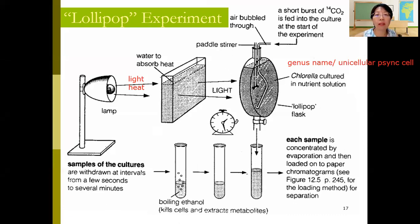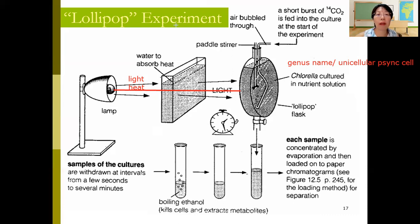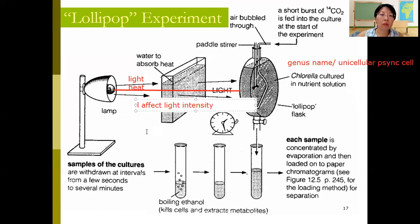This flask has to be flat to ensure that the distance from the light source to the specimen is almost the same throughout — standardizing the distance as much as possible. This matters because light intensity is inversely proportional to the distance from the light source: the greater the distance, the lower the light intensity.